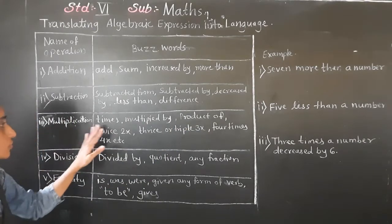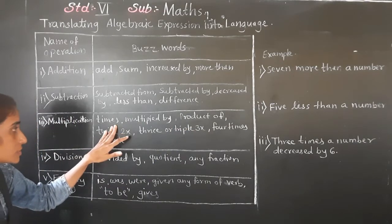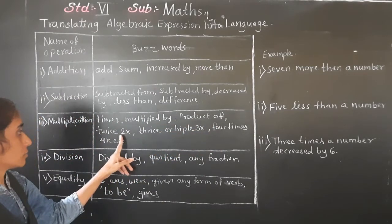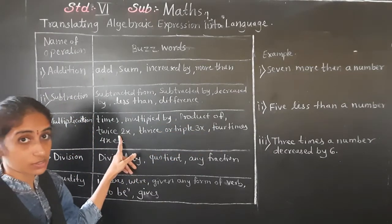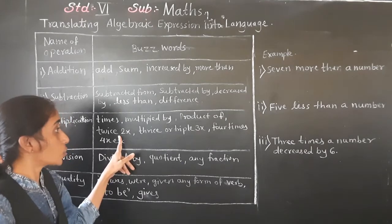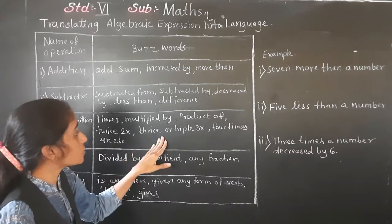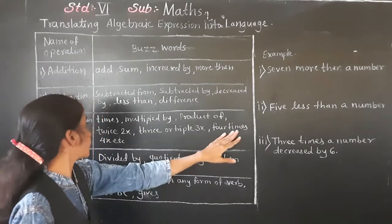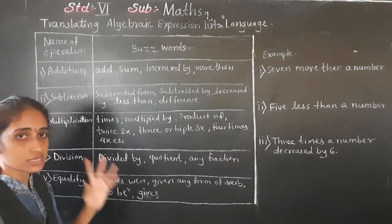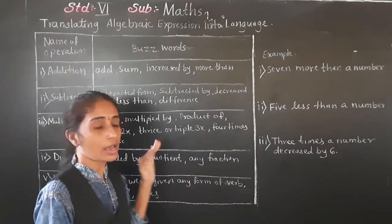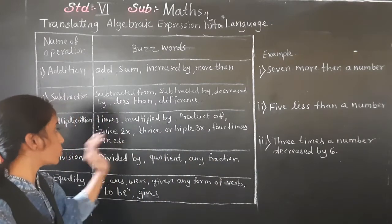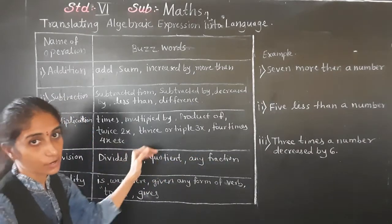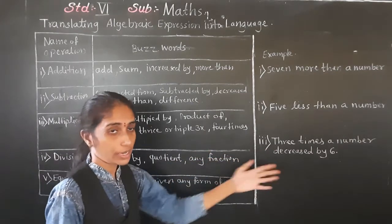In multiplication, the words we use are: times, multiply by, product of, twice (meaning two times a number — 2x), thrice or triple (meaning 3x), four times (meaning 4x), five times (meaning 5x), and so on.